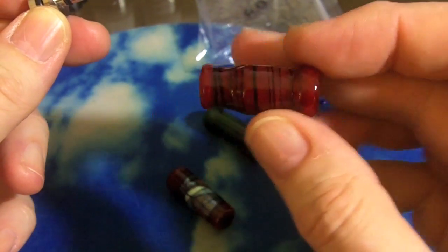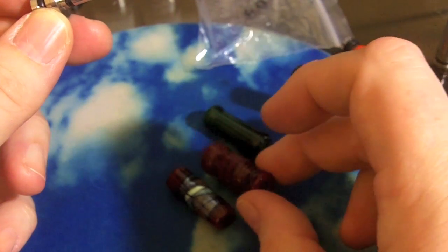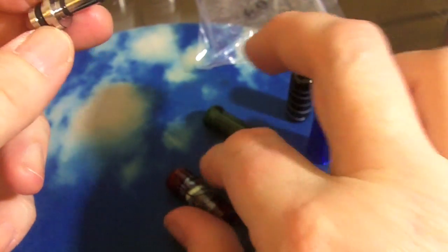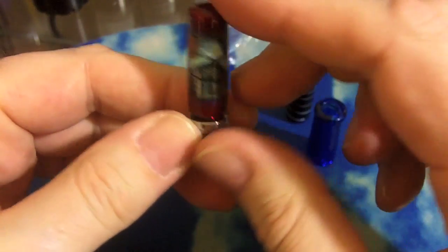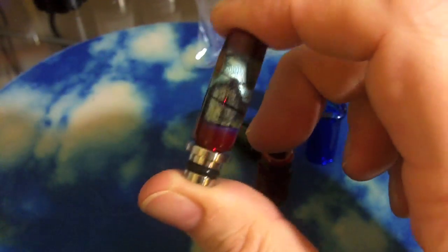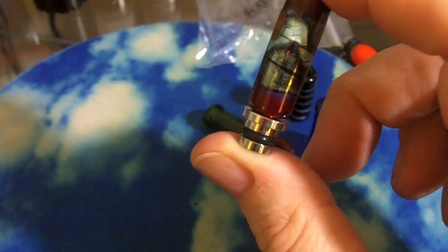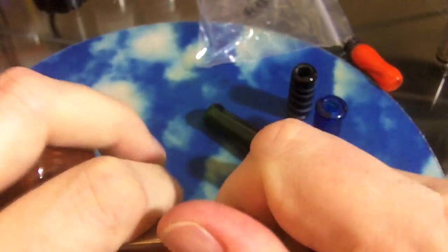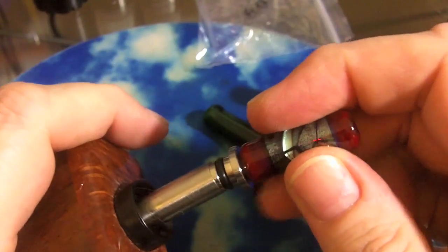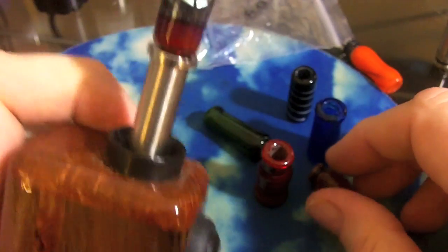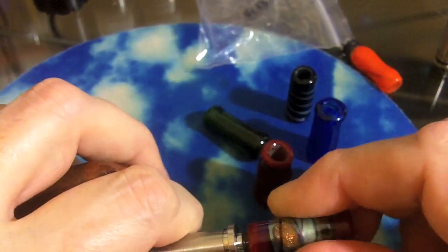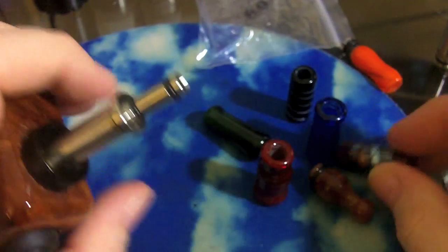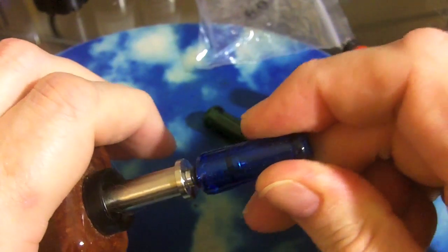Basically what you do is take the top and push it onto that stainless steel base, and you have a changeable glass drip tip. I can take that top off, put one of the other tops on, and have a different color. I have that solid stainless steel base sitting in the atomizer or cartomizer, and I can just pop one off if my mood changes and put on another one.